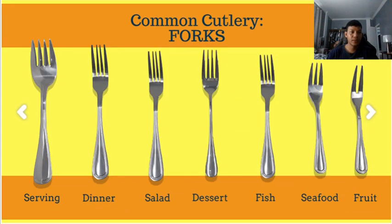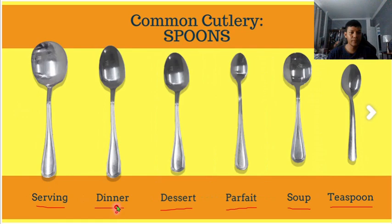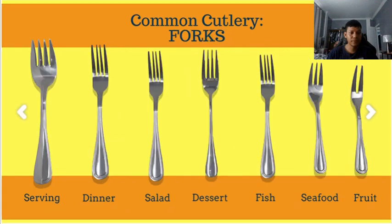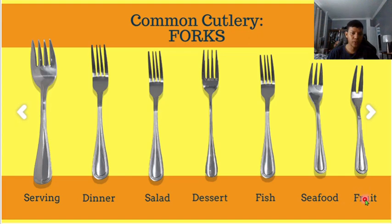We also have different types of forks: serving fork, dinner fork, salad fork, dessert fork, fish fork, seafood fork, and fruit fork. The serving fork is the partner of the serving spoon, the dinner fork partners with the dinner spoon, and the salad fork partners with the salad spoon. The fish fork is used for fish, the seafood fork for seafood, and the fruit fork for fruits like watermelon or mango.